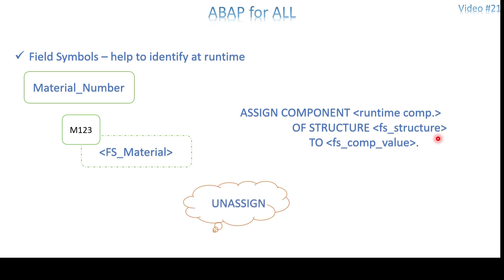To properly reuse a field symbol for different data mediums, use the UNASSIGN keyword. UNASSIGN removes the association between the data medium and your field symbol cleanly.